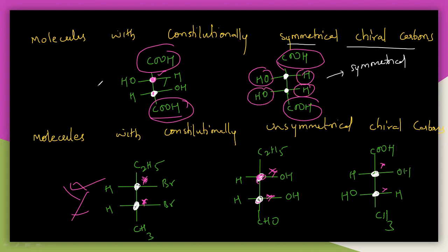So these are symmetrical chiral carbons and these are unsymmetrical chiral carbons. This is completely the classification of molecules based on symmetry. Finally, we will see the stereochemistry of allenes, biphenyls, and spirans in the next session. Thank you.